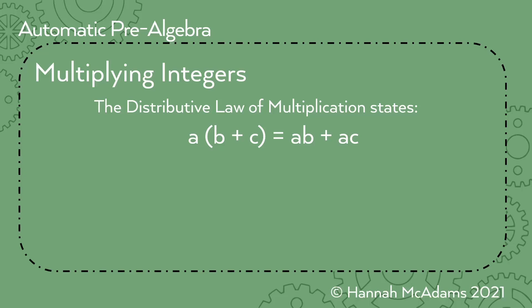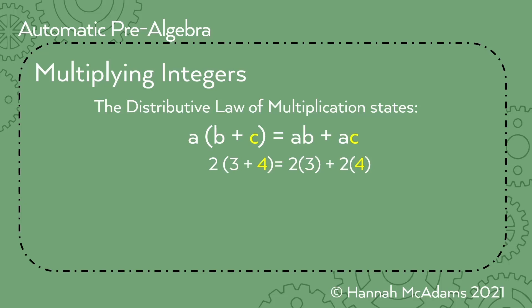Some people don't like letters — it scares them in math. So what I like to do to make it easier is replace the letters with numbers. I'm going to pick two for A, three for B, and four for C. The goal is that at the end, after we've solved all this, the numbers are the same. What do we need to do first? Do what's in the parentheses first because of order of operations. Three plus four is seven, so we have two times seven equals two times three plus two times four.